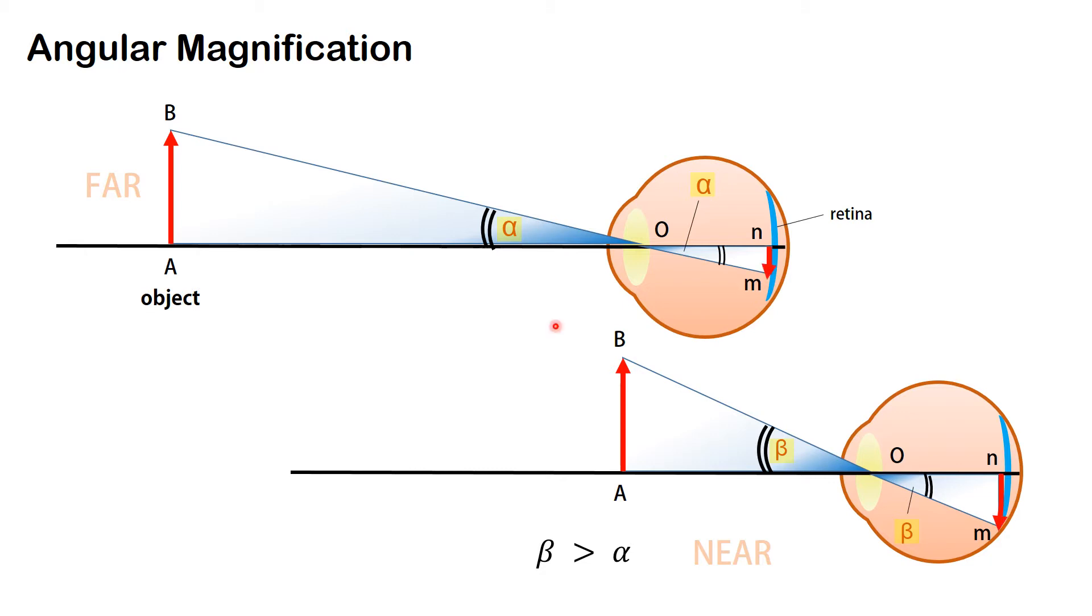We know that when an object is situated far from the eye, it subtends a small angle on the retina. Whereas if the object is moved closer to the eye, it subtends a larger angle on the retina and therefore appears bigger.